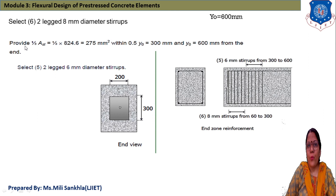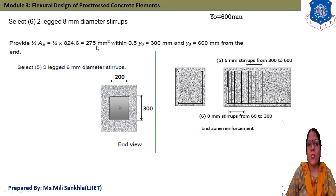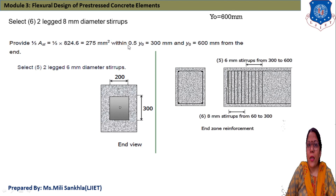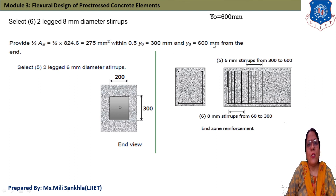For the remaining reinforcement, we select stirrups providing one-third of Ast: (1/3) × 824.6 = 275 mm square. We provide 2-legged 8 mm diameter stirrups giving an area of 275 mm². This reinforcement is provided within 0.5×Y0, i.e., within 0.5 × 600 = 300 mm from the end.